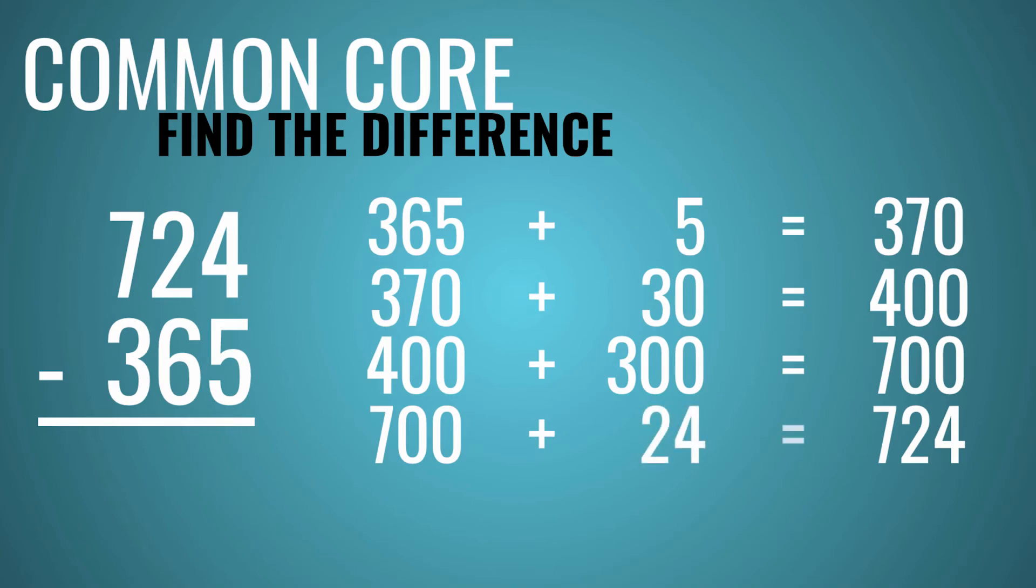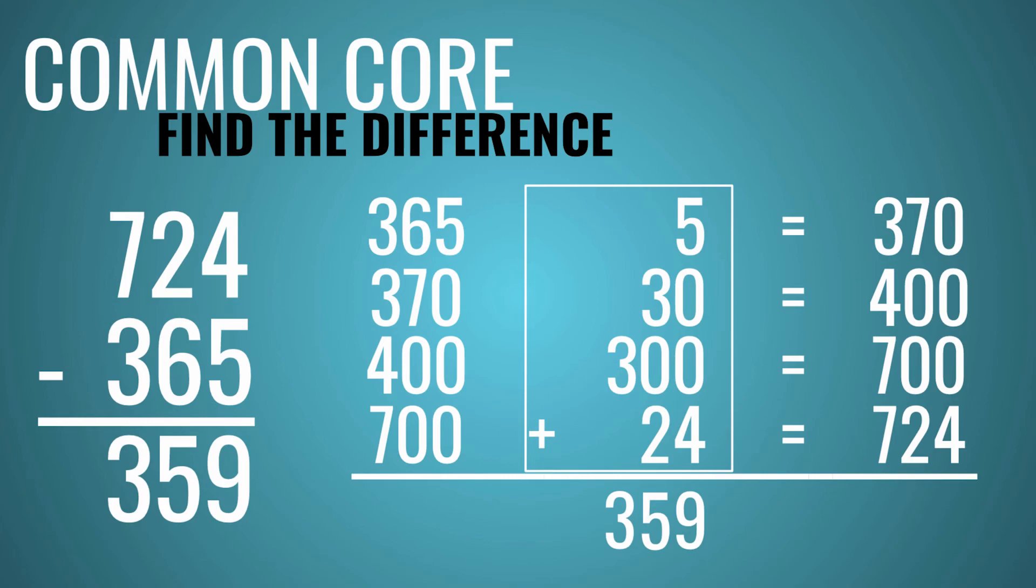From here, we add up all of those elements that we just added. And we're going to get 5 plus 4 is 9, 3 plus 2 is 5, and then we bring down the 3. So we have the exact same answer, just a different method of getting it.